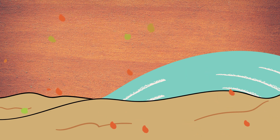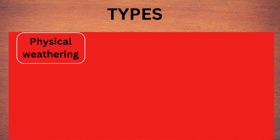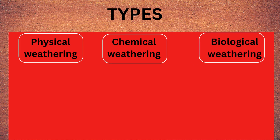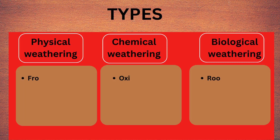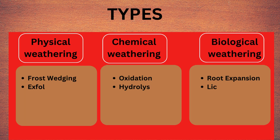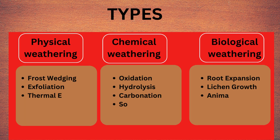Next, the types of weathering. There are three types of weathering, namely physical, chemical, and biological, and these three are further classified into several subtypes. We will see each in detail.